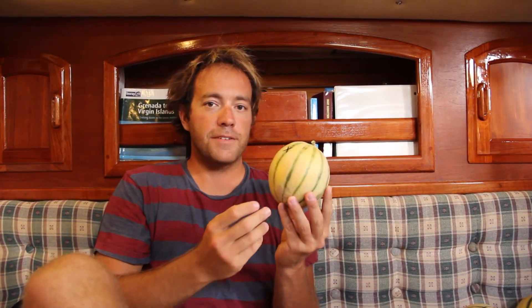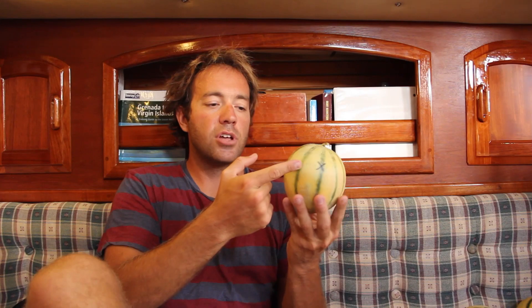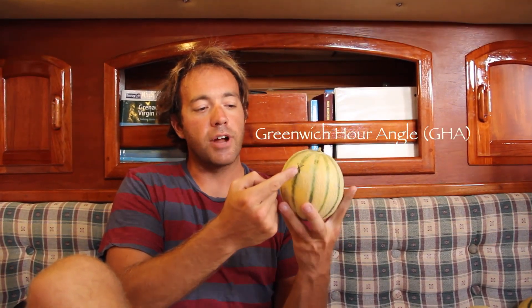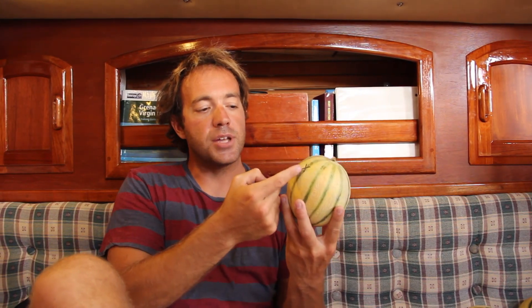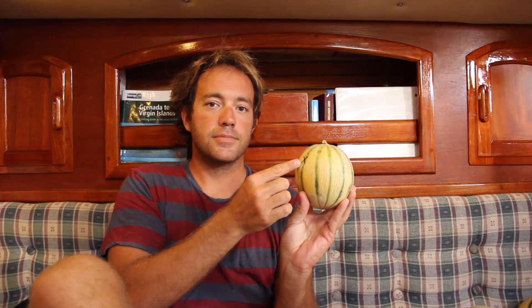In celestial navigation it's a bit different. Longitude is measured continually westward from Greenwich all the way around the circle and back to Greenwich again, so it needs a different name. It's called Greenwich Hour Angle — the angle between Greenwich and the spot directly beneath the celestial object on the Earth, measured always westward from zero all the way to 360 degrees. The concept of geographic position will be critical going forward: the latitude of the GP is declination and the longitude of the GP is Greenwich Hour Angle.